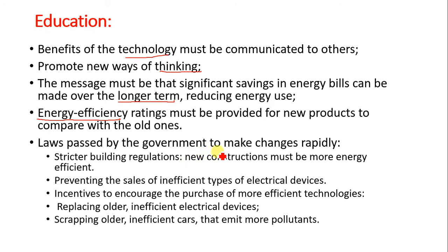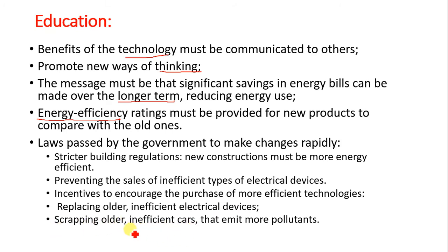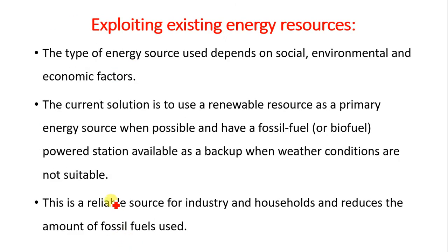Laws passed by the government can make changes rapidly. These include stricter building regulations requiring new constructions to be more energy efficient, preventing the sales of inefficient electrical devices, providing incentives to encourage the purchase of more efficient technologies, replacing older inefficient electrical devices, and scrapping older inefficient cars that emit more pollutants.